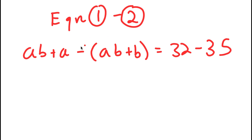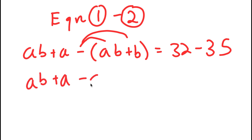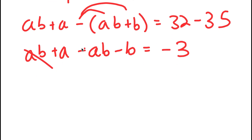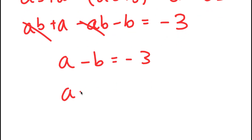To solve this, I'm first going to distribute the negative sign. So now I get AB plus A minus AB minus B is equal to 32 minus 35, which is negative 3. I can cancel out AB and negative AB, so I'm left with A minus B is equal to negative 3, meaning A is equal to B minus 3.